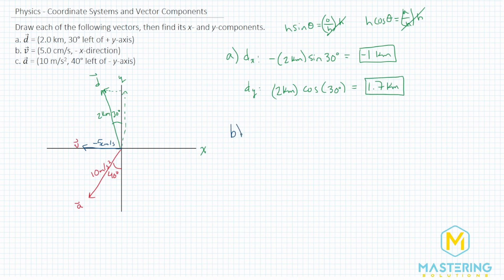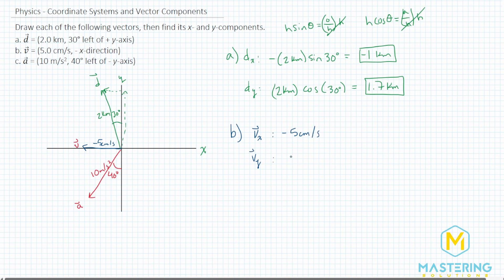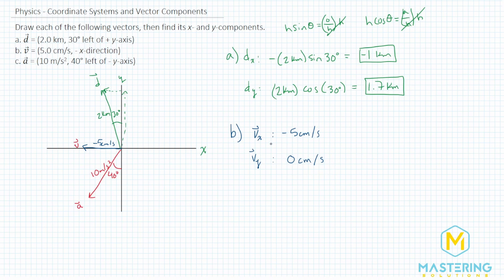Moving on to part b for vector v. In this case we only have an x component, so v sub x equals negative 5 centimeters per second. The y component is 0 centimeters per second, since there is no y component.